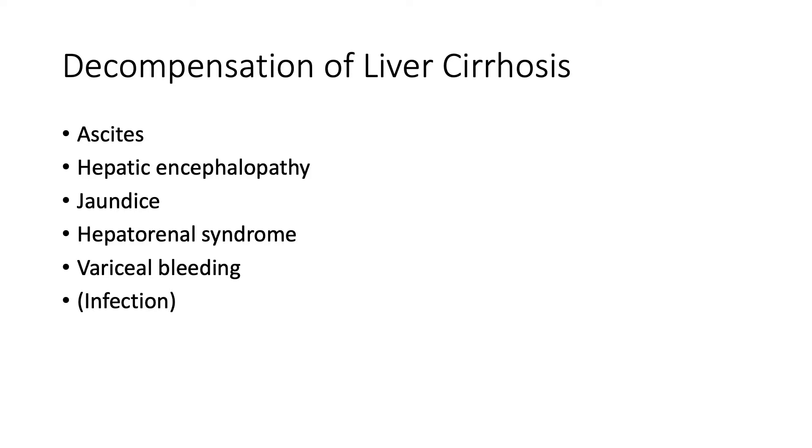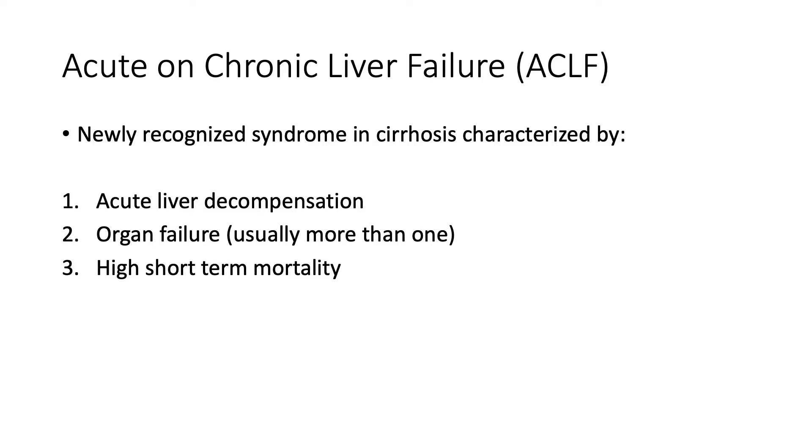There's no fixed definition of acute decompensation, but for the purposes of this discussion, we'll talk about the patient who presents with new decompensation or worsening of their liver synthetic function in the context of decompensated liver disease presenting to hospital. Within this group, there are also patients who present with acute on chronic liver failure, a relatively new concept defined by acute liver decompensation, organ failures usually more than one, and a high short-term mortality.